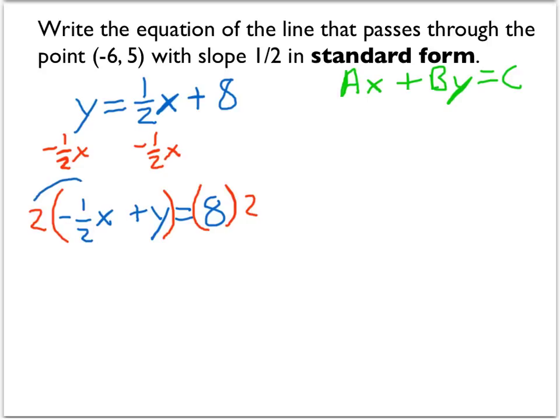So we have 2 times negative 1/2 x is negative x, or negative 1x, we'll just say negative x, 2 times y, so we'll add 2y, and that equals 2 times 8, which is 16.